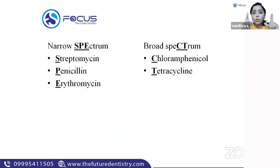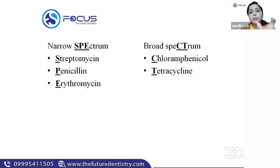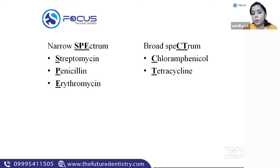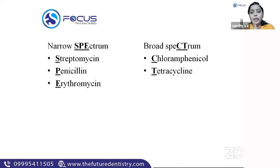Now, another classification: narrow-spectrum versus broad-spectrum antibiotics. To remember narrow-spectrum antibiotics, take the first three letters of 'spectrum' — SPE: streptomycin, penicillin, erythromycin. Since penicillin is there, cephalosporin is also narrow spectrum. Since streptomycin is there, all aminoglycosides are also narrow spectrum. For broad spectrum, take the next two letters — CT: chloramphenicol and tetracycline.